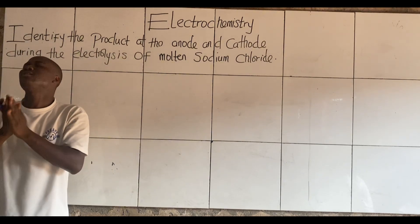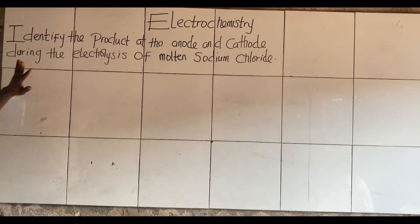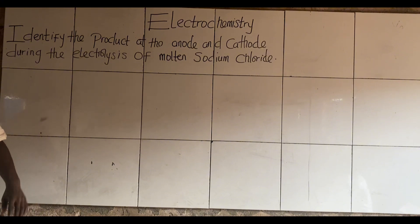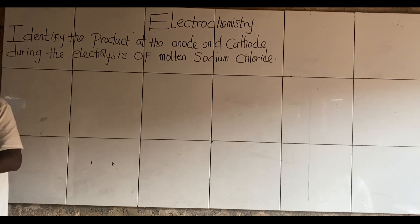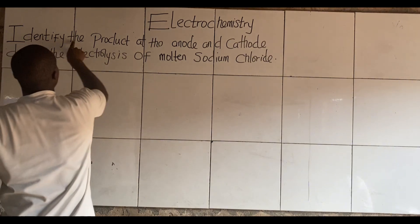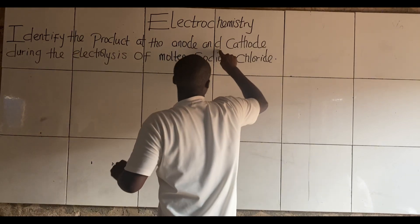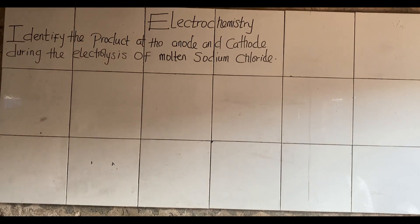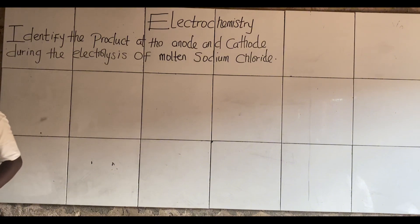We'll solve it and analyze it together. Remember, I taught you guys the introductions to these aspects. So we want to use the knowledge I gave to solve this question. Please pay attention. I repeat the question. The question says, identify the products at the anode and cathode. This is one word we should take note of — anode and cathode. So we have to understand what does anode mean and also what does cathode mean.